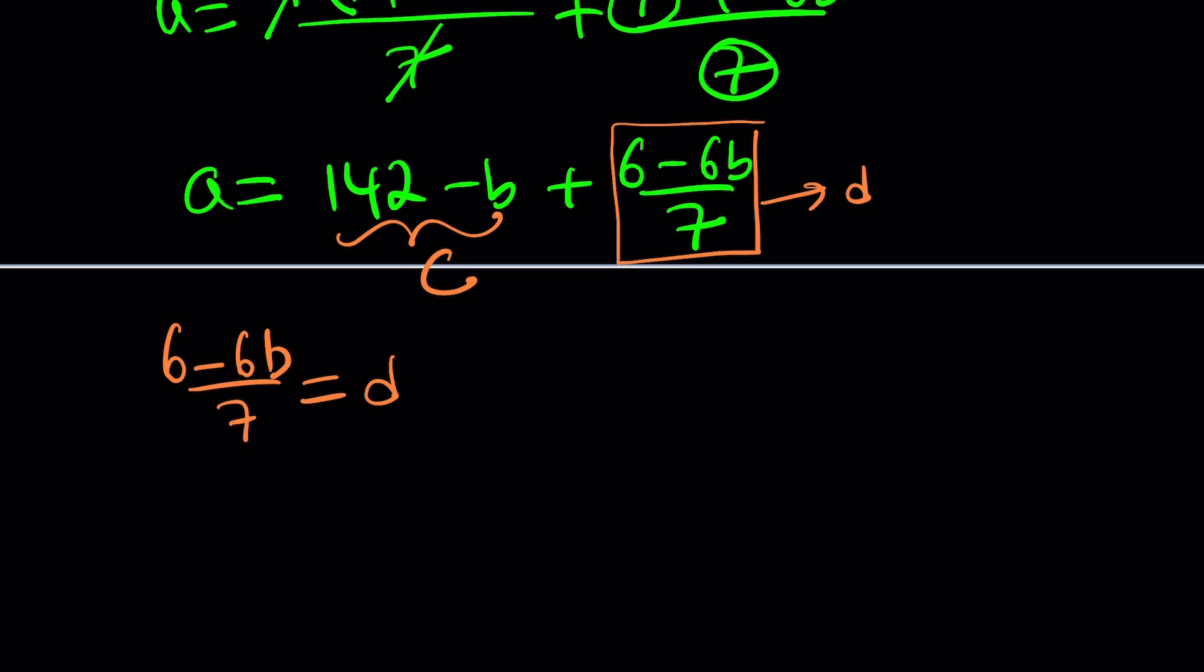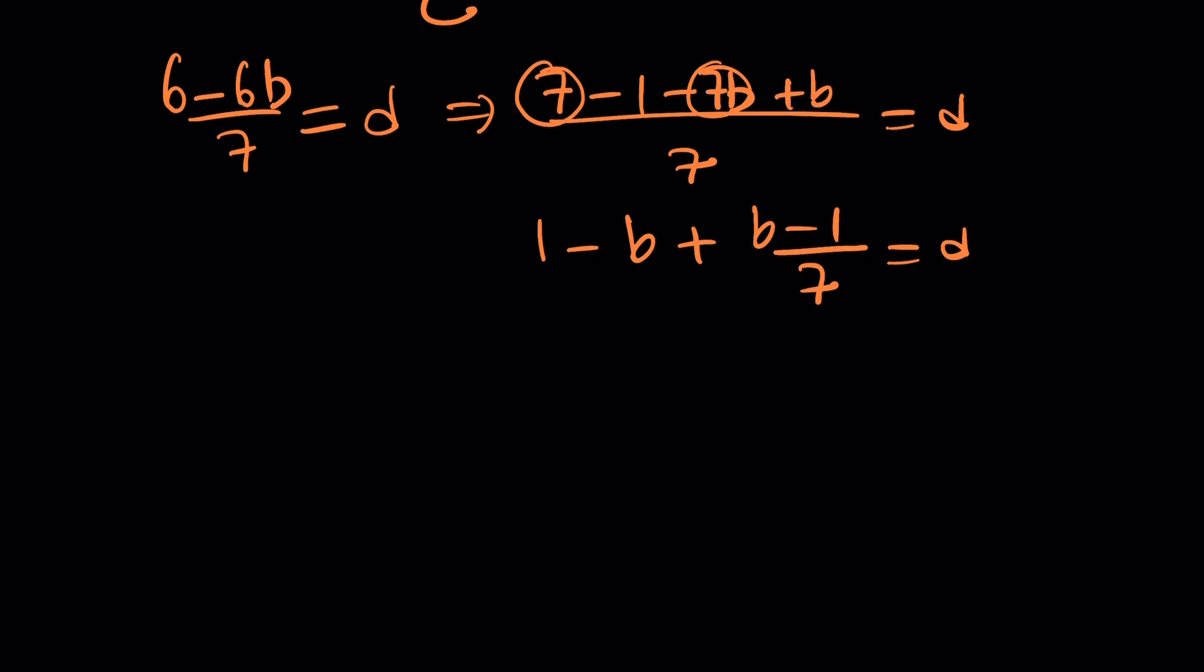I can make this as 7 minus 1 minus 7B plus B divided by 7. We're going to have more pieces that is divisible by 7. It's going to be like 1 minus B plus B minus 1 over 7 equals D. This needs to be an integer as well. In other words, this is an integer. D is an integer. And then we were able to write D a little differently like this. And now, this needs to be an integer.